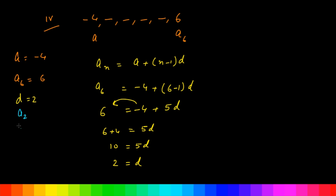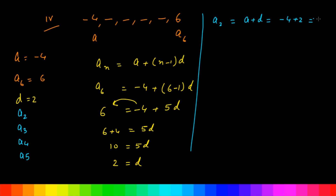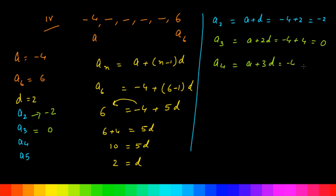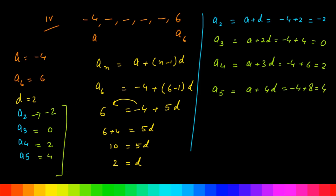Let us find the missing terms A2, A3, A4, and A5. A2 = -4 + 2 = -2. A3 = -4 + 2×2 = -4 + 4 = 0. A4 = -4 + 3×2 = -4 + 6 = 2. A5 = -4 + 4×2 = -4 + 8 = 4. Here are the missing terms.